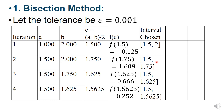Now we start the third iteration. a = 1.5, b = 1.75. Add both values then divide by 2, we get c = 1.625. Put this value in the function. New interval: a = 1.5, b = 1.625. The same process will follow in the fourth iteration.